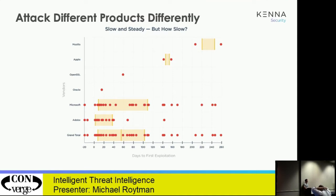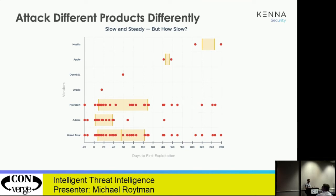Attackers don't think that way. This chart shows the timeline from when a vulnerability was released to when we saw the first exploitation in the wild. Apple, Mozilla, and SSL vulnerabilities will take over 100 days to see the first exploitation after release. That means attackers aren't figuring out new vulnerabilities — they're looking through the NVD, figuring out ways to exploit known vulnerabilities, which takes time and software development. Adobe is completely different: an exploit might come out before the vulnerability disclosure, three days after, or five days after.